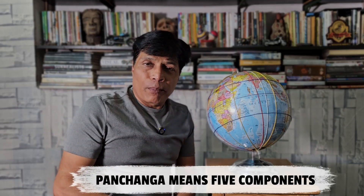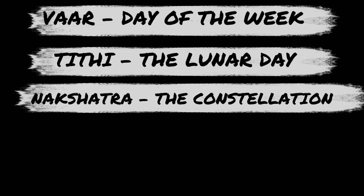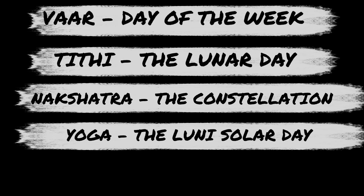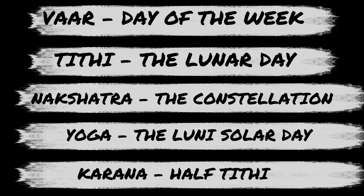Panchang means five components: Panch means five, Ang means components. The five components of the Hindu calendar and almanac are: Vara (the day of the week), Tithi (the lunar day), Nakshatra (the constellation), Yoga (the lunisolar day — that is, the angles of the sun and moon in the sky), and Karna (the half-Tithi). Hindus refer to the Panchang to find out Tithis — the dates of their festivals — and to select auspicious days and times for important occasions like marriage or Grah Pravesh (the housewarming ceremony). The Panchang goes beyond this and also forecasts eclipses and weather, predicting whether there will be good rainfall, less rainfall, or a dry spell.